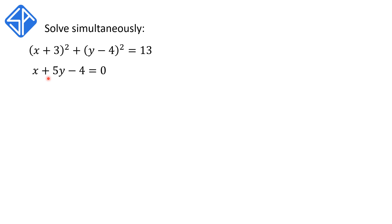For this example, we're going to be solving it using the substitution method. So from the second equation, we're going to rearrange it to make x the subject. We simply subtract 5y and add 4 to both sides, and this gives us x is equal to 4 minus 5y.